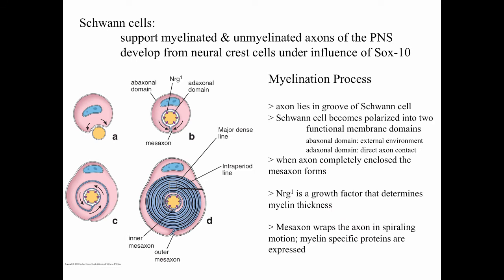The myelination process is rather interesting and complicated to understand in a three-dimensional manner. Basically, myelination starts as an axon lies within a groove of the Schwann cell, and as that happens the Schwann cell becomes polarized to form two distinct functional membrane domains: an ab-axonal domain which faces the external environment, and an ad-axonal domain which is in direct contact with the axon. When the Schwann cell completely encloses an axon by one wrapping, you form a structure called a mesaxon — that's the point where the Schwann cell cytoplasms come together.